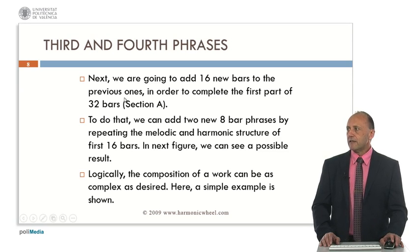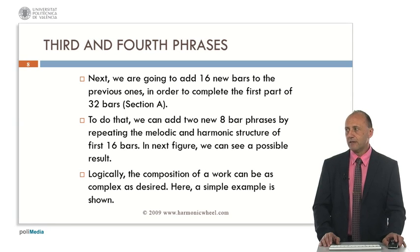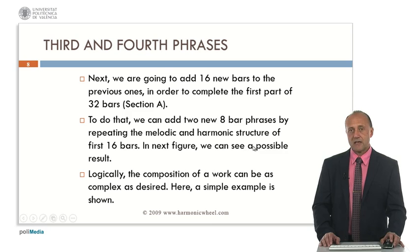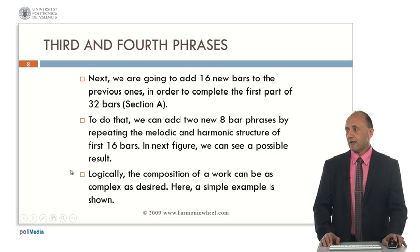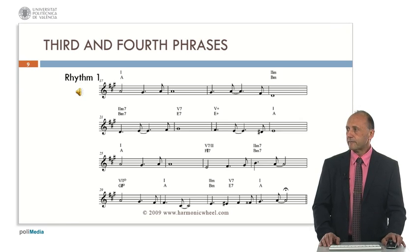Next we are going to add 16 new bars to the previous ones in order to complete the first part of section A. To do that, we can add two new eight-bar phrases by repeating the melodic and harmonic structure of the first 16 bars. The harmonic structure will be exactly the same and we will change slightly the melody. Logically the composition of our work can be as complex as desired; here this is a simple example. So here we can listen to the third and fourth phrases with rhythm 1.